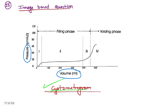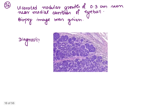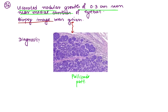Coming to question number 16, an important question: one ulcerated nodular growth of 0.3 cm is noted near the medial canthus of the eyeball. Biopsy of the nodular growth shows this type of lesion. The image shows a typical palisade pattern — seen in which type of carcinoma?